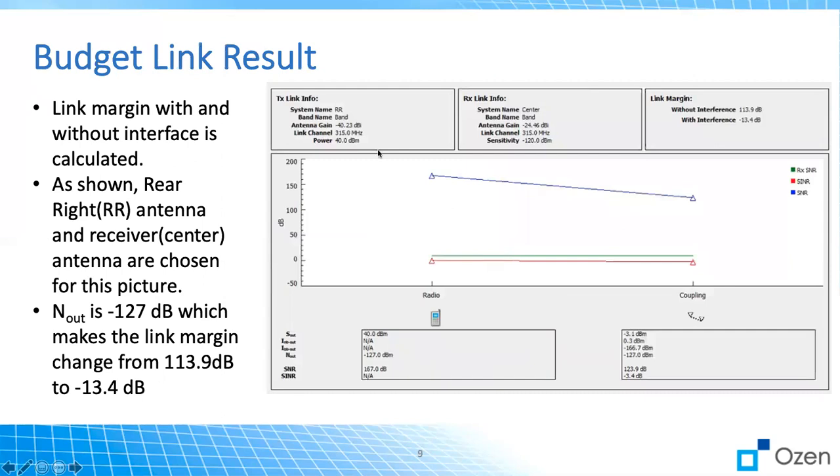And here you see the result. Here is the receiver, here is the transceiver, here is the receiver, and here is the link margin. As you can see, without any interference, the link margin is 113. And if you have interference, it is minus 13. So that gives us a good number as to how we should design our amplifier or our antenna or if there is no need for amplifier.